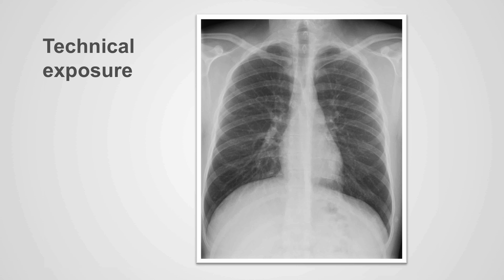The exposure of the x-ray is optimum when the anatomy is clearly visible. On an adequately penetrated chest x-ray, the outlines of the thoracic vertebral bodies and the disc spaces should be visualized through the heart shadow and through the mediastinum. Vascular markings should be visible through the heart.